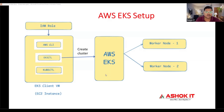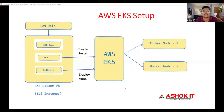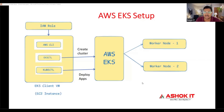Once the cluster is ready, in order to communicate with the cluster and deploy applications, we use kubectl software. kubectl is a command line utility that sends requests to the Kubernetes control plane to deploy applications. We are going to use manifest YAML files in which we configure a Docker image and create pods in the cluster. The pods are created on the worker nodes and are exposed using Kubernetes services.